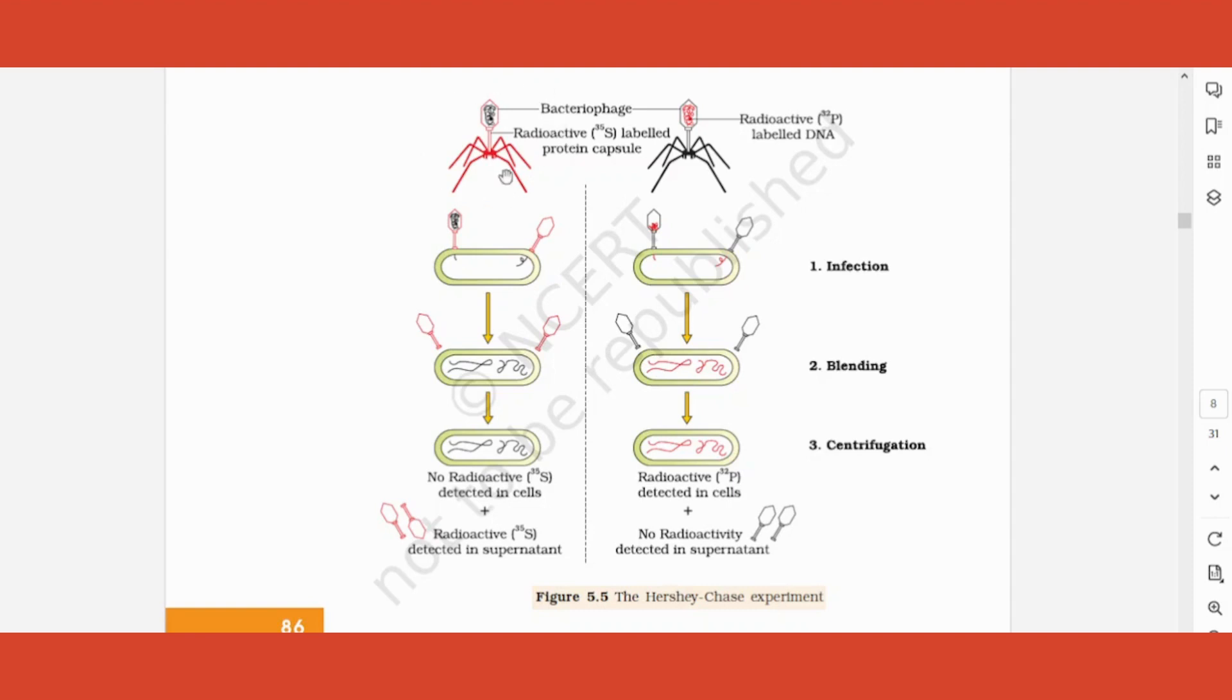They grew virus for many generations. The first set of virus for many generations in a medium containing radioactive sulfur. The second set they grew for many generations on medium containing radioactive phosphorus.